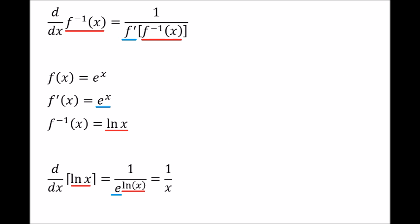Now let's use that expression to find the derivative of the natural logarithm. We start with the function f of x equals e to the x. The derivative is also e to the x, as underlined in blue. The inverse is the natural logarithm, as seen in red. Plug it all into our formula and we find that the derivative of the natural logarithm of x is equal to 1 over x.